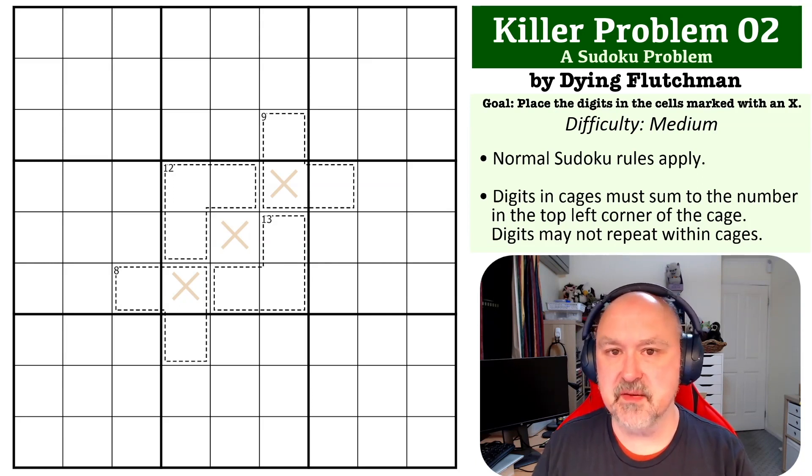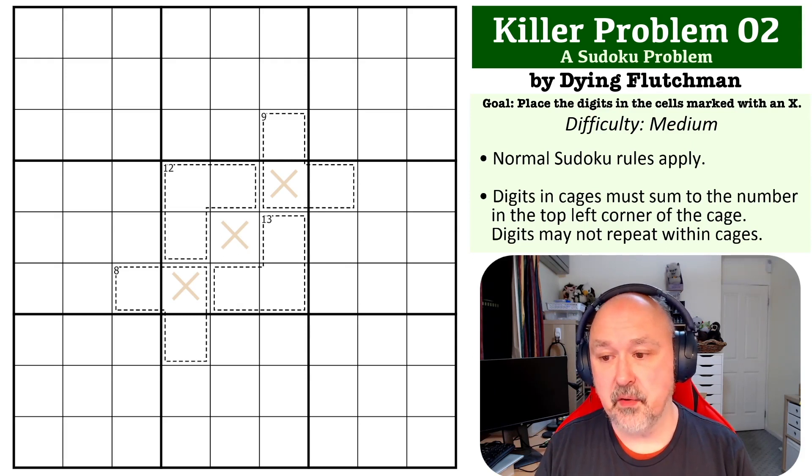So yep, the rules of Killer is of course the digits in the cages must sum to the number in the top left corner of the cage, and digits cannot repeat within cages. And the goal of this is to place the digits in the cells with X's in them. So I'm going to let you pause the video and see if you can solve it.